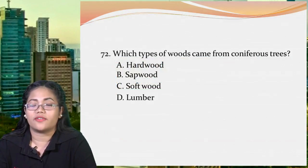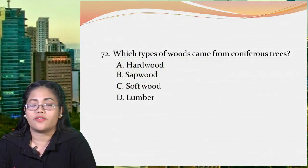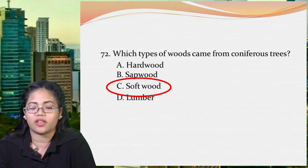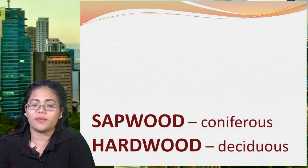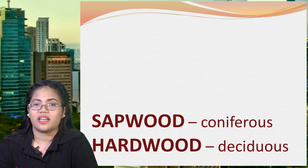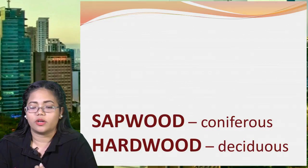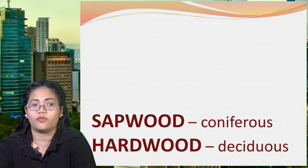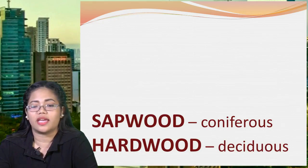Next: which type of wood comes from coniferous trees? A: hardwood, B: softwood, C: softwood, or D: lumber. The answer is letter C, softwood. Softwood refers to wood from coniferous or cone-bearing trees such as pine. Hardwood comes from deciduous trees — examples are nara, oak, or maple. Lumber is a byproduct of the tree, not a wood type. So remember: softwood is from coniferous trees and hardwood is from deciduous trees.